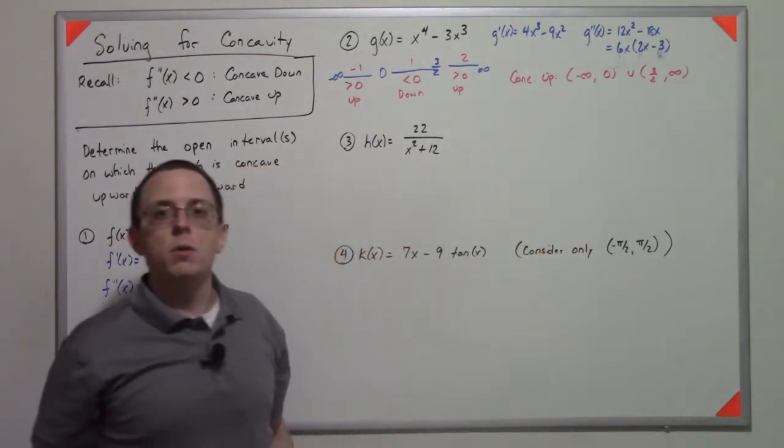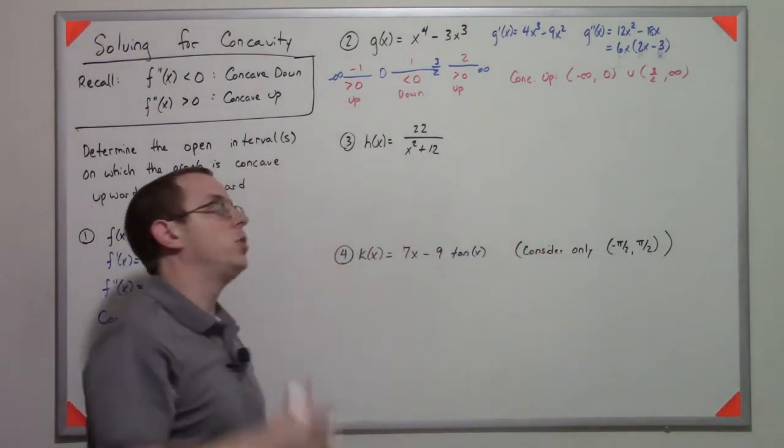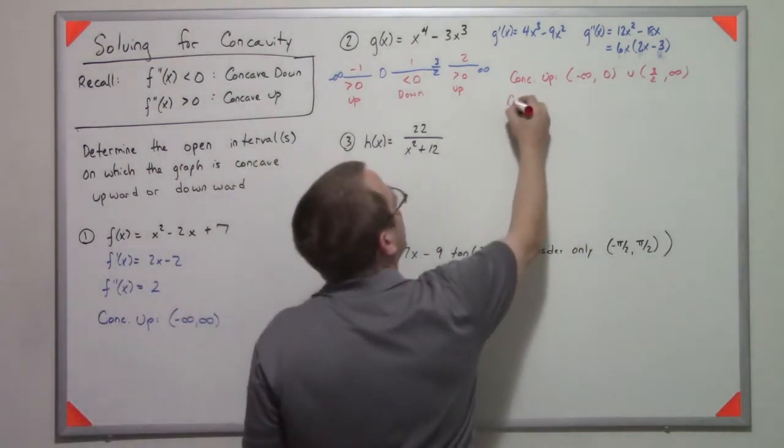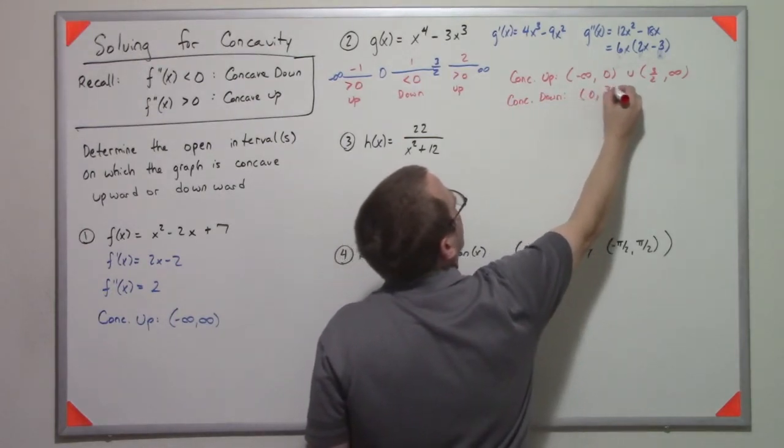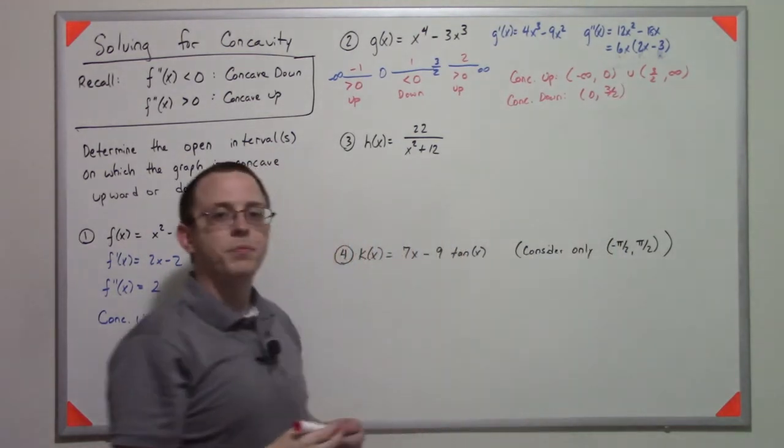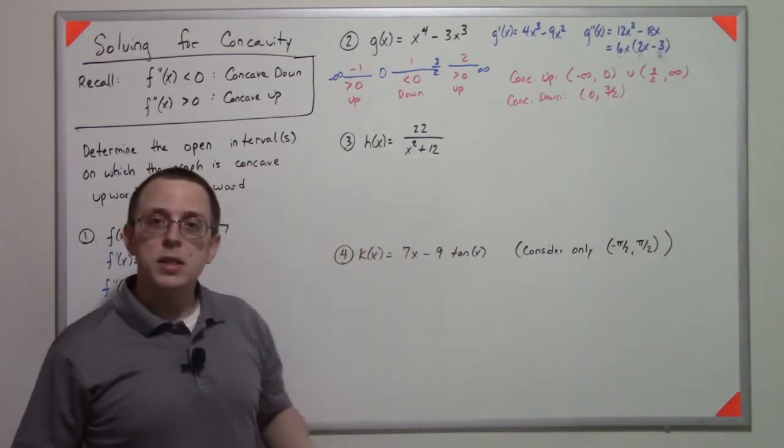From negative infinity to 0, unioned with 3 halves to infinity, it's concave up, and it's concave down from 0 to 3 halves. Let's continue on.